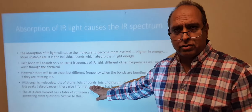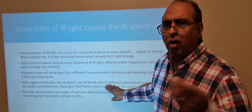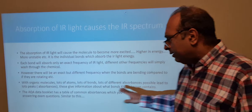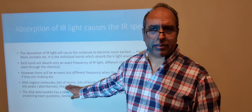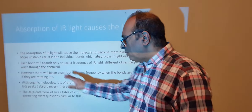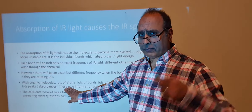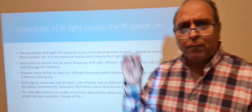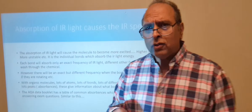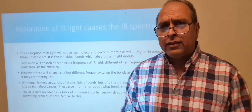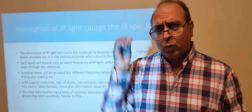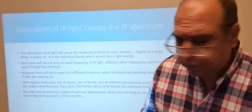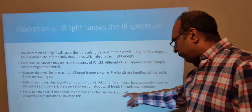With organic molecules, when you have lots of atoms and lots of bonds rotating, stretching, and bending, you get lots of peaks — sometimes called absorbance peaks. They all give information about the bonds present, and if we know what bonds are present we can try to piece together what the unknown chemical is. The AQA data book gives you a table of common absorbances.